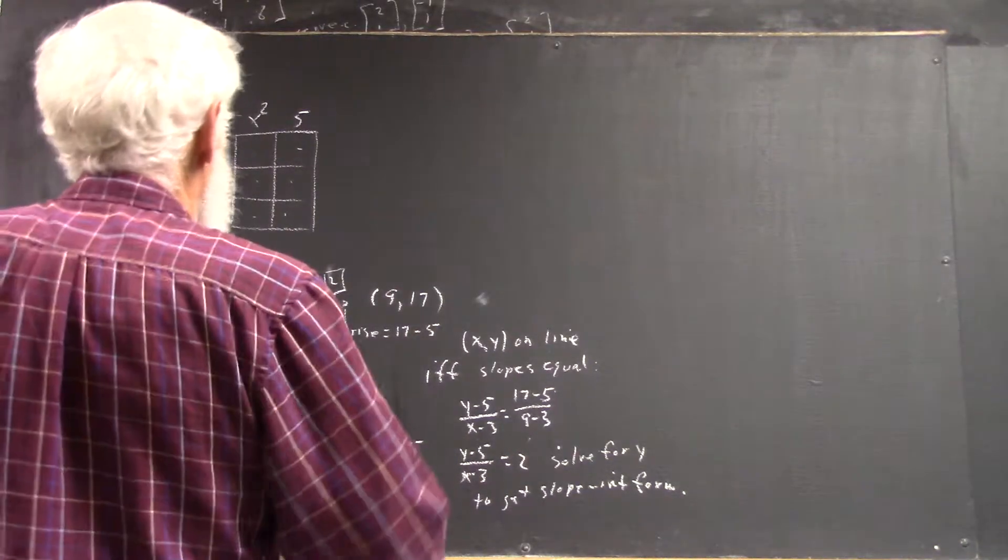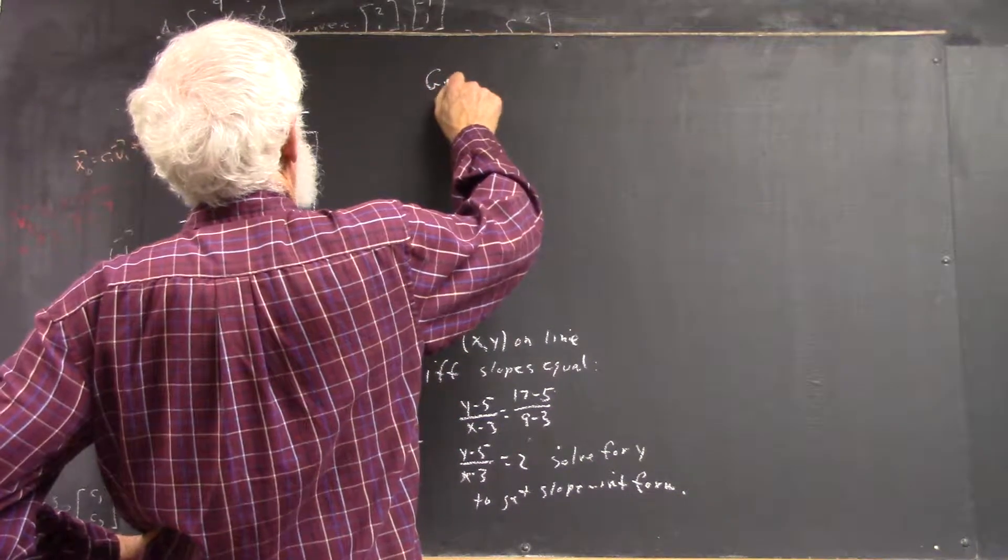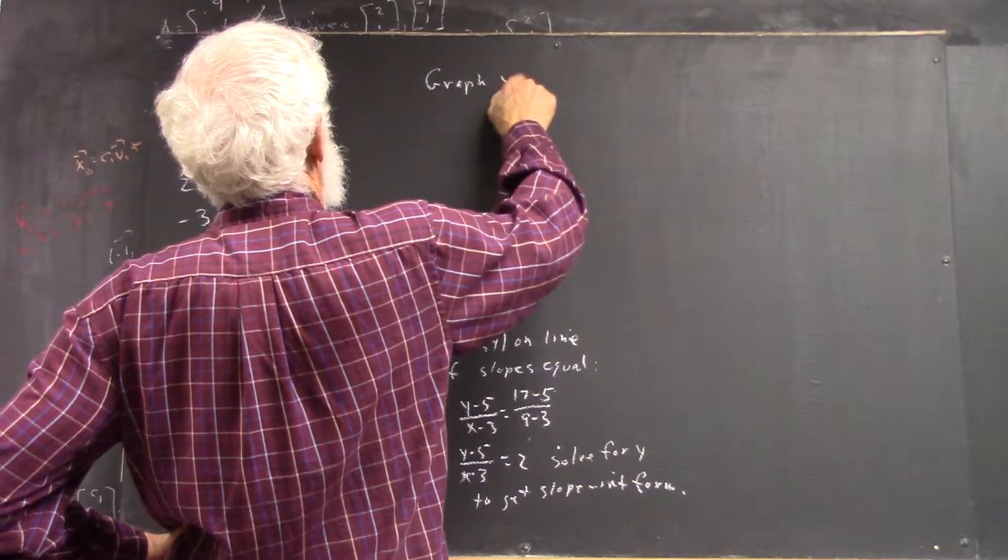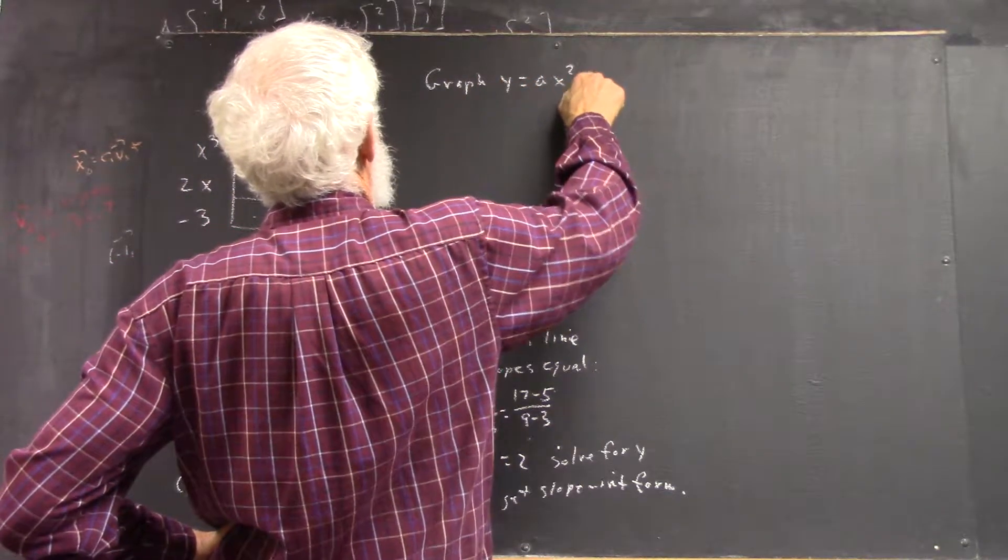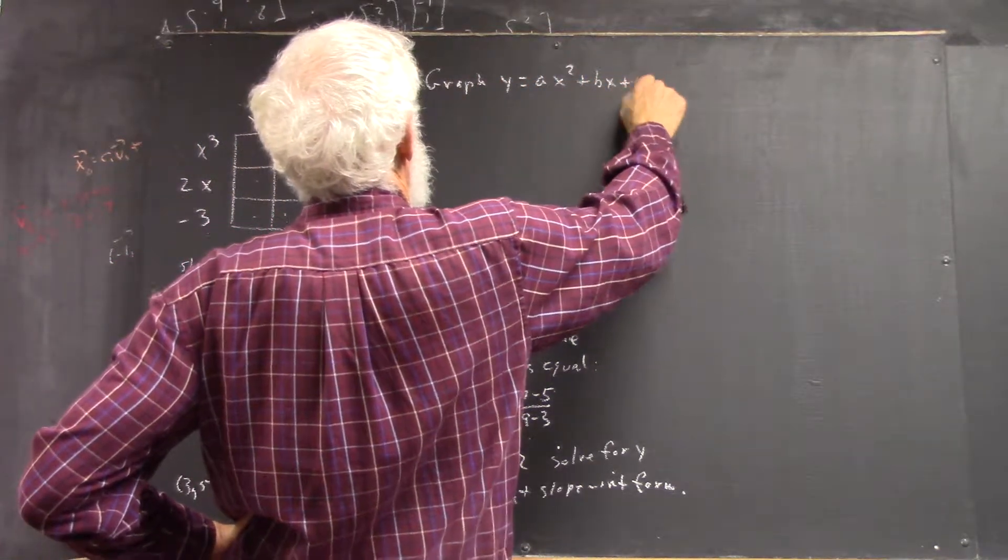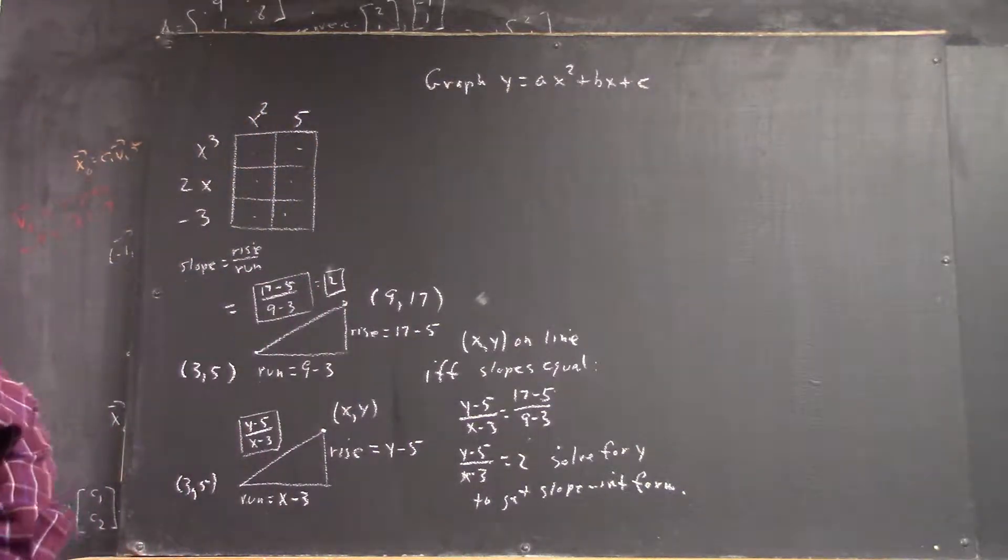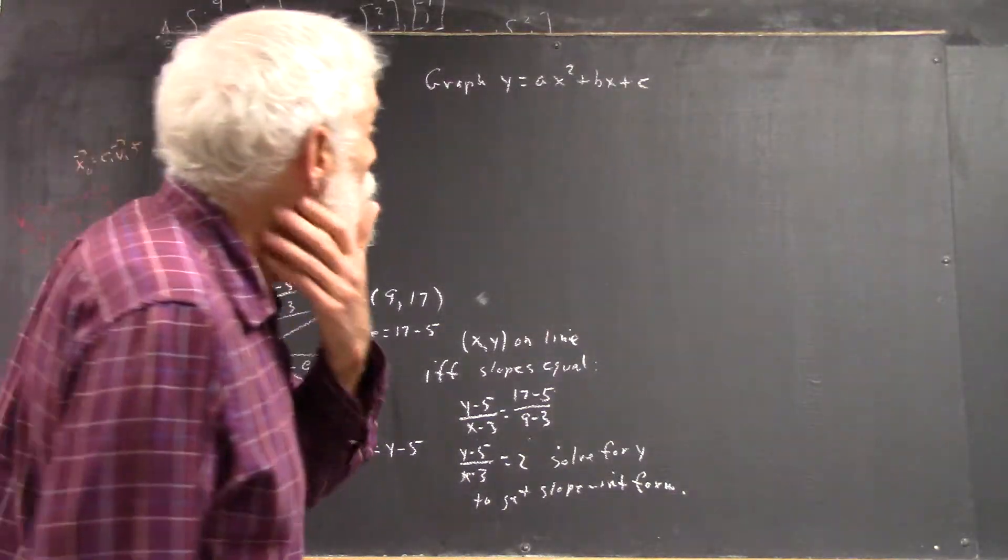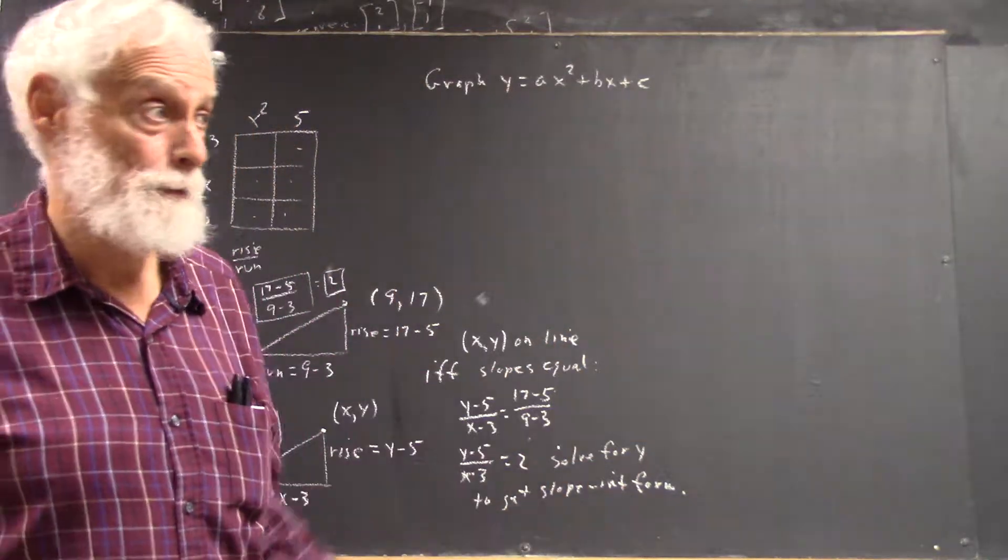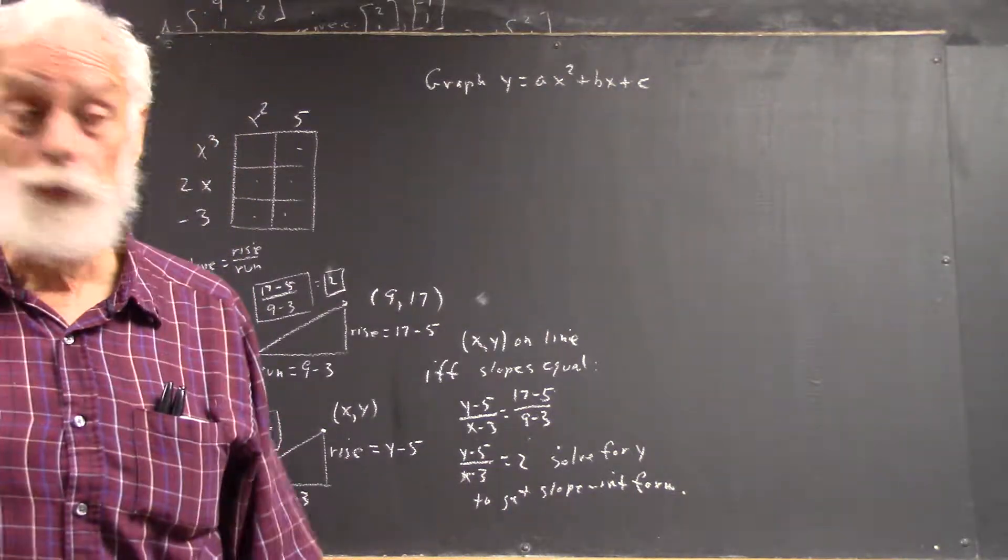Okay, to graph a quadratic function, because that does occur, right? We don't make a big, long table. We graph by transformations.